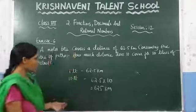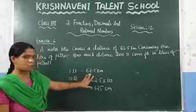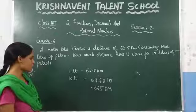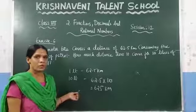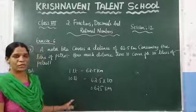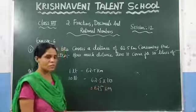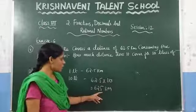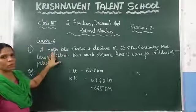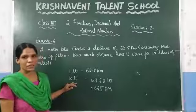With 1 liter of petrol, the motorbike is travelling a distance of 62.5 km. In the question they asked: with 10 liters of petrol, how much distance does the motorbike travel? For that, just take the multiplication of these two values, and we get 625 km. 625 km is the distance travelled by the motorbike using 10 liters of petrol.